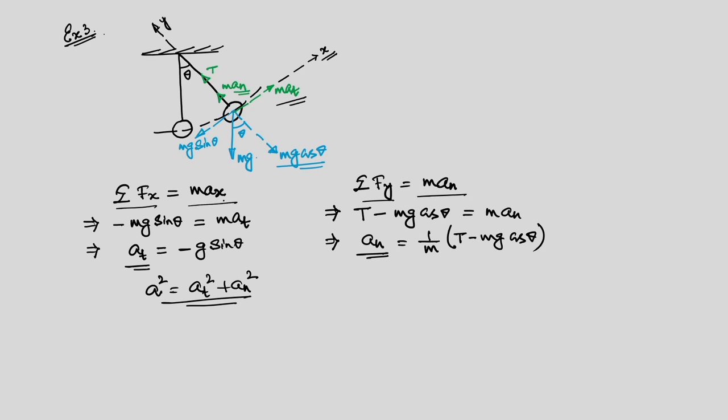This clearly shows that even for curvilinear motion of a simple pendulum we can apply Newton's second law and correlate forces with acceleration. The difference from rectilinear motion is that here we have two acceleration components — one along the tangential direction and one along the normal direction.